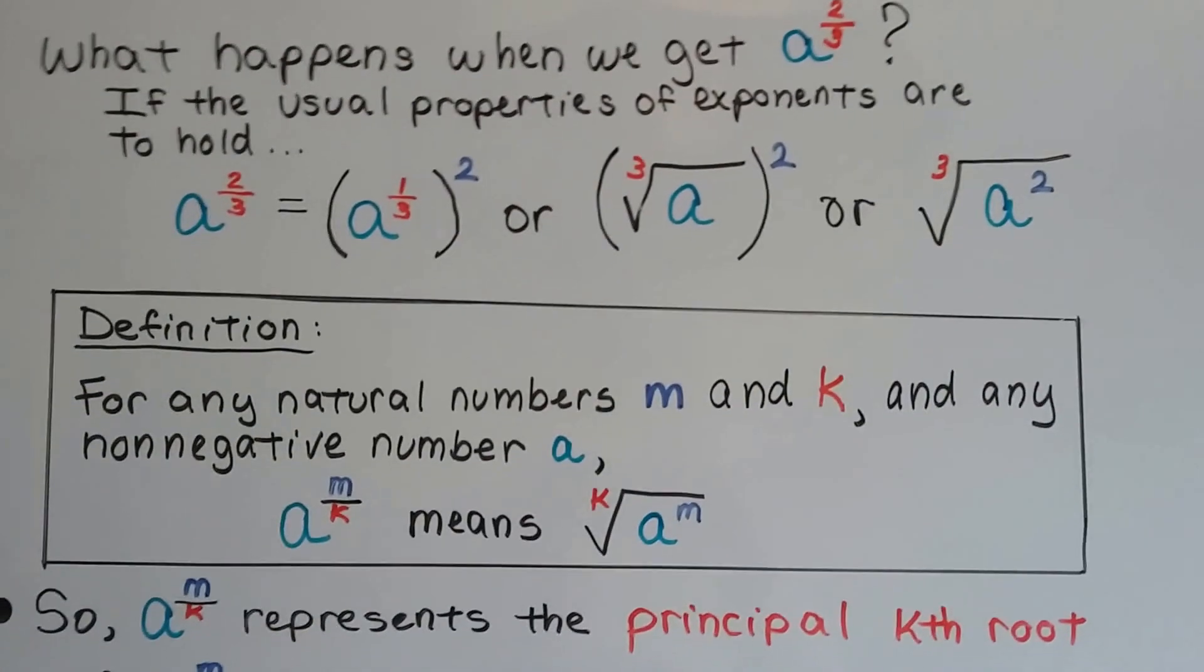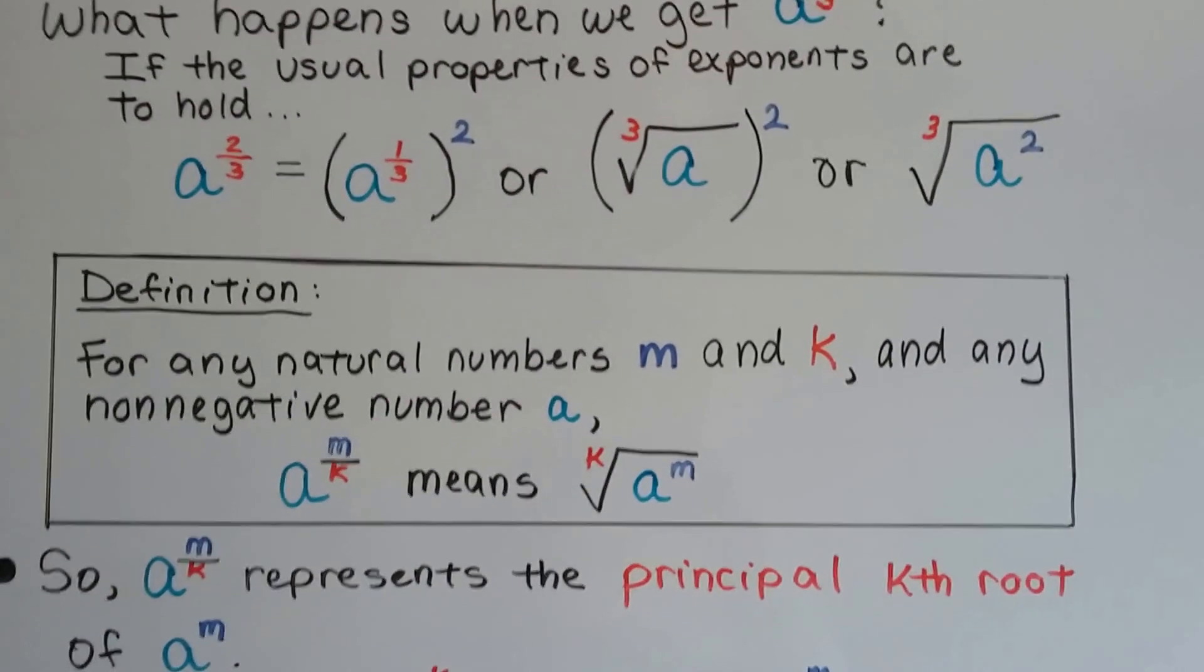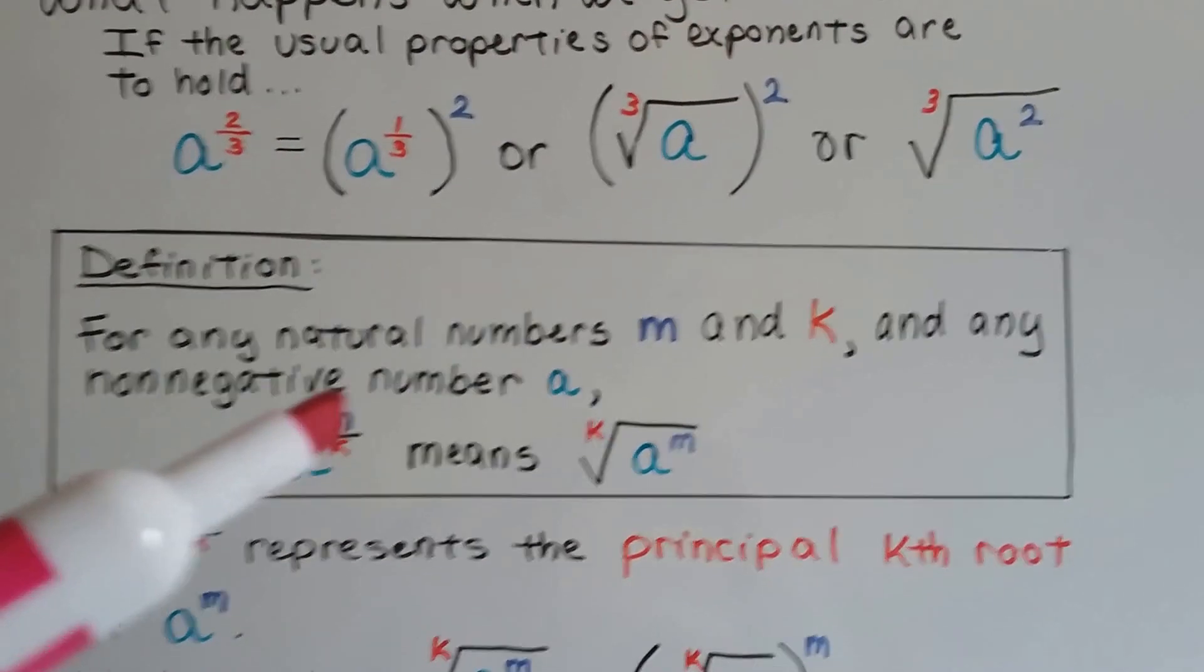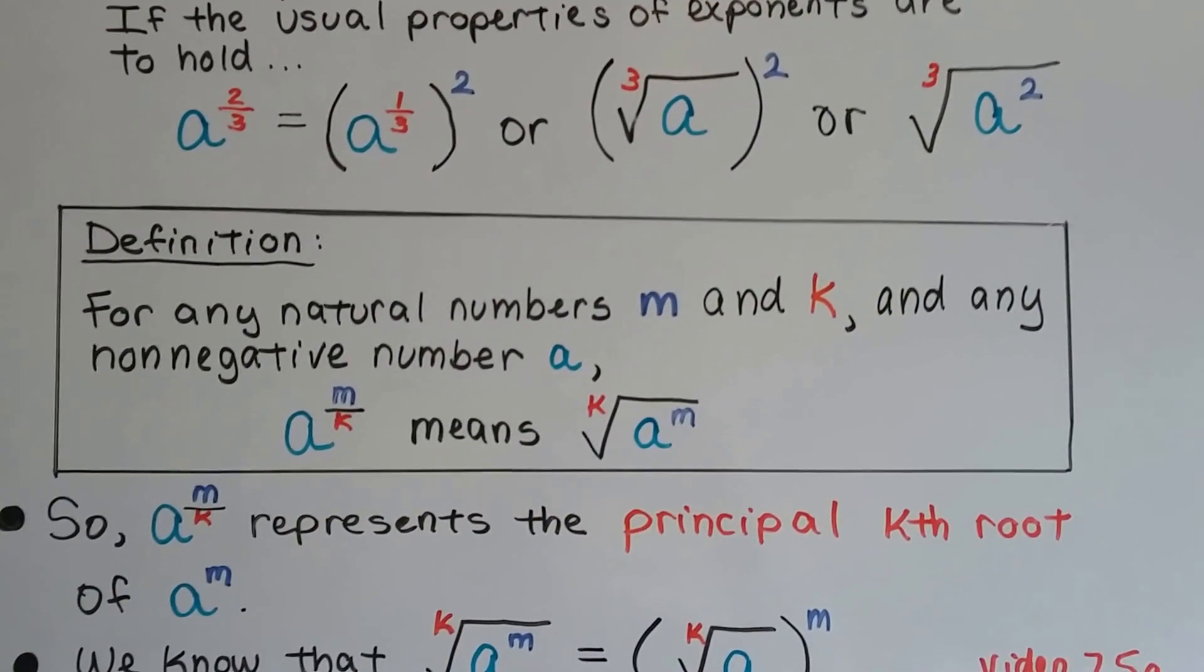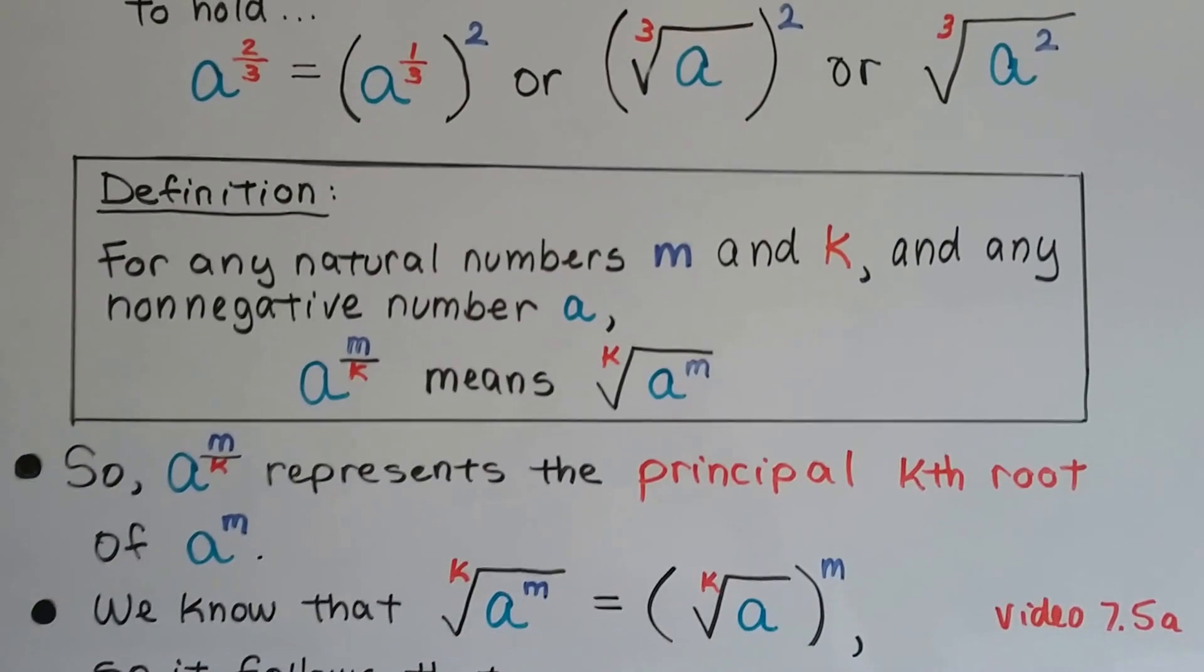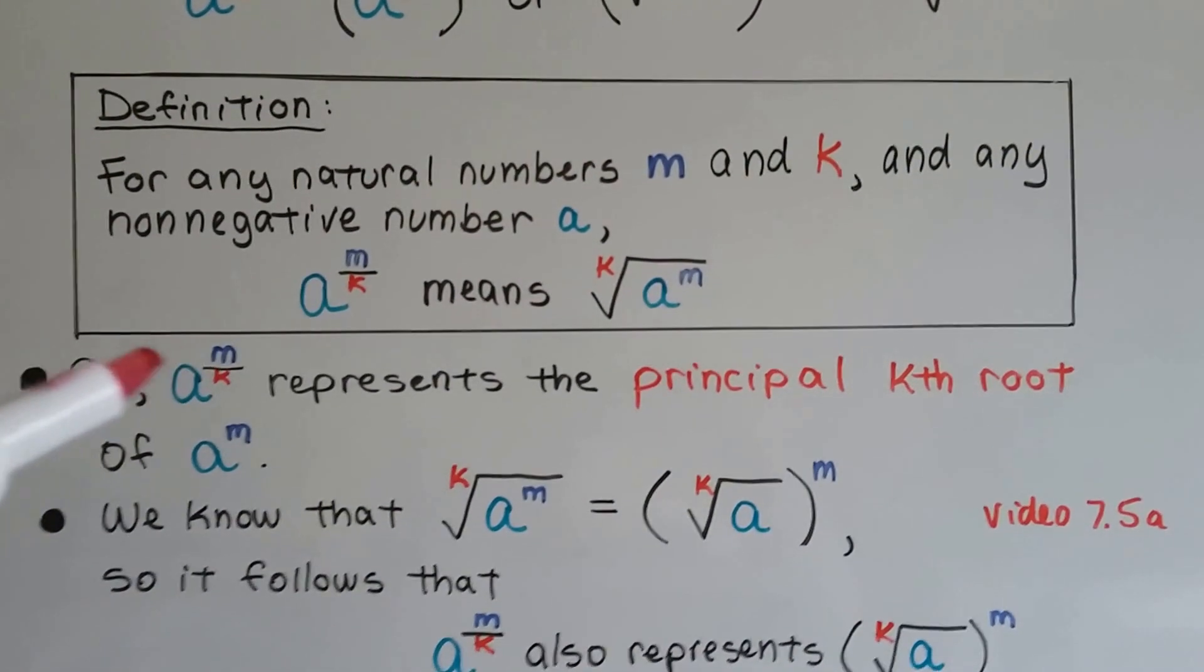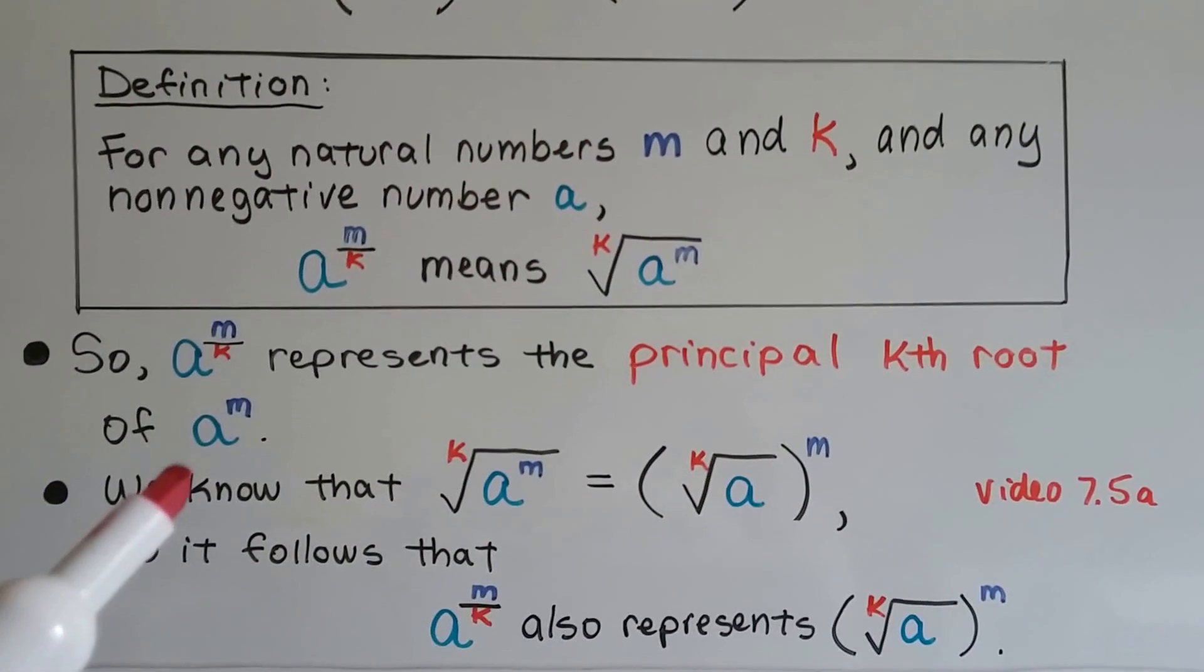Here's another definition for any natural numbers m and k and any non-negative numbers a, a to the m/kth means the kth root of a to the m power. I know this starts to get confusing, but I'm going to show you a trick that's going to make this really easy. So if we've got a to the m/kth power, it represents the principal kth root of a to the m power.